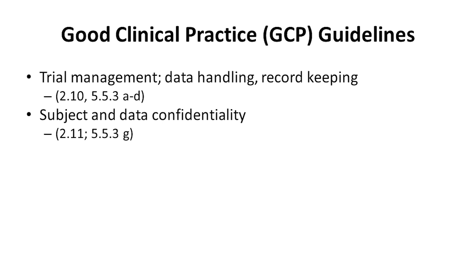Good clinical practice guidelines are an international ethical and scientific quality standard for the design, conduct, and record of research involving humans. GCP is composed of 13 core principles, two of which apply to data. Specifically, all clinical trial information should be recorded, handled, and stored in a way that allows for accurate reporting, interpretation, and verification. Also, the confidentiality of records that could identify subjects should be protected, respecting the privacy and confidentiality rules in accordance with applicable regulatory requirements.